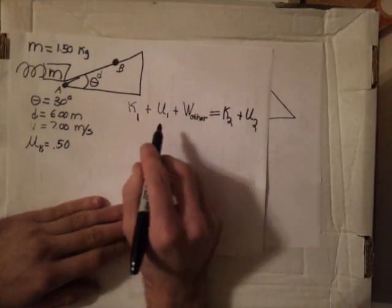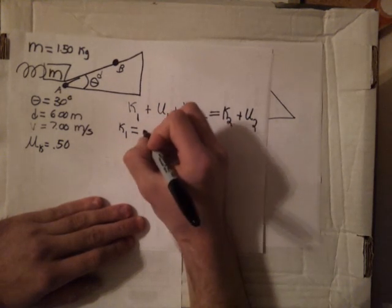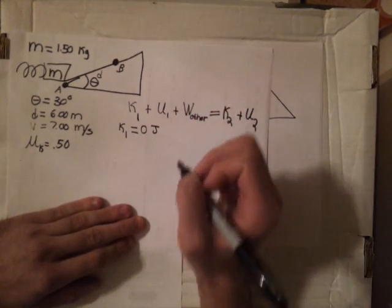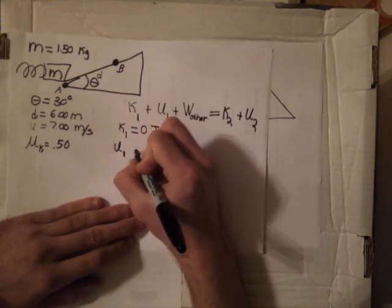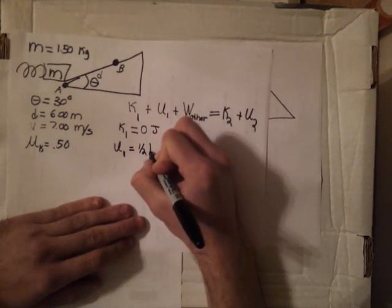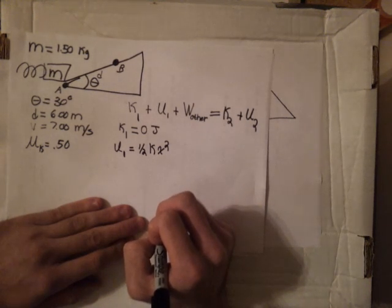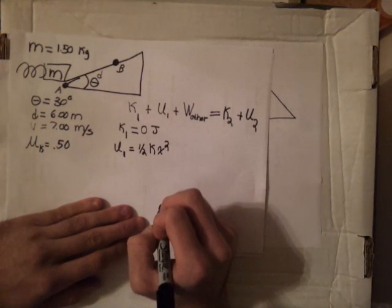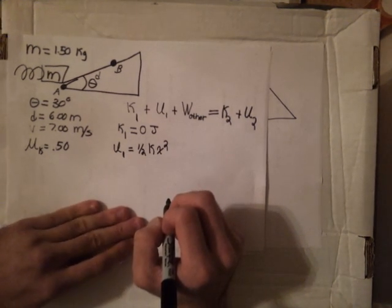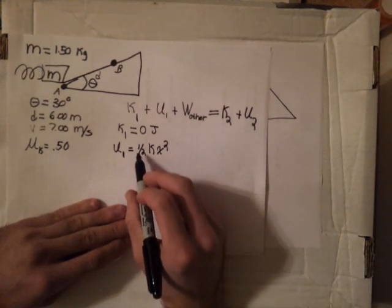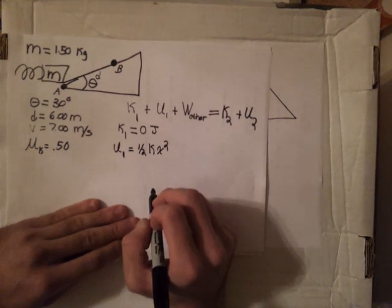At this point we can define each term. The kinetic energy at point 1 is equal to 0 joules, because there's no initial velocity. The potential energy at point 1 is equal to one-half kx squared by Hooke's law, where k is the spring constant and x is the displacement from equilibrium — but since they're asking for the total spring potential energy, the individual values of k and x don't actually matter to us.